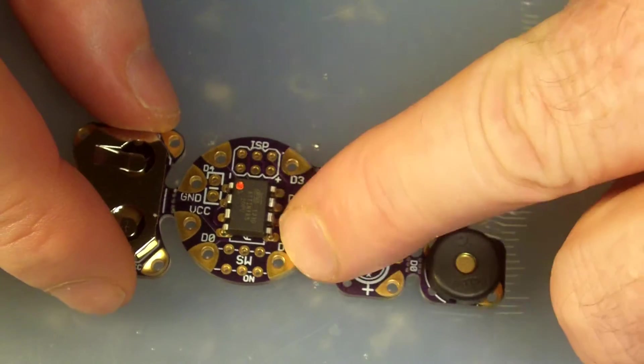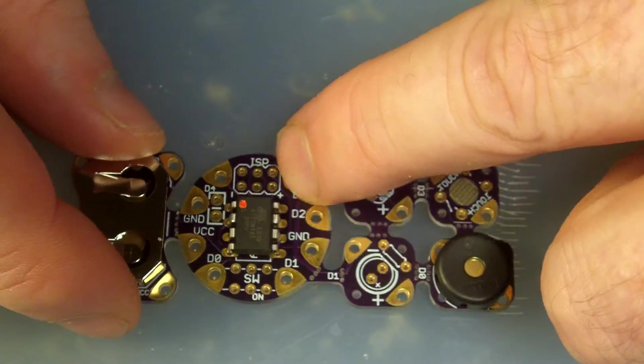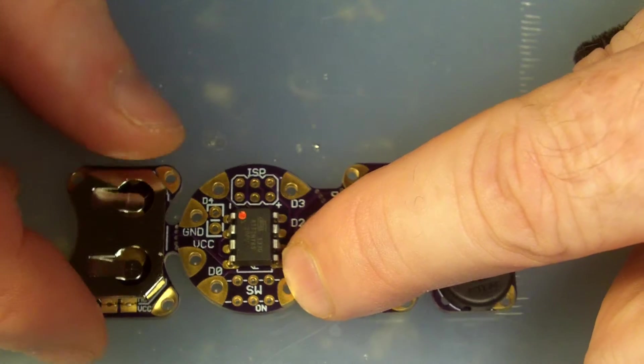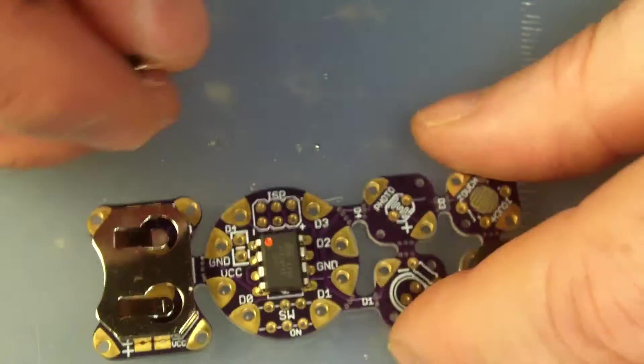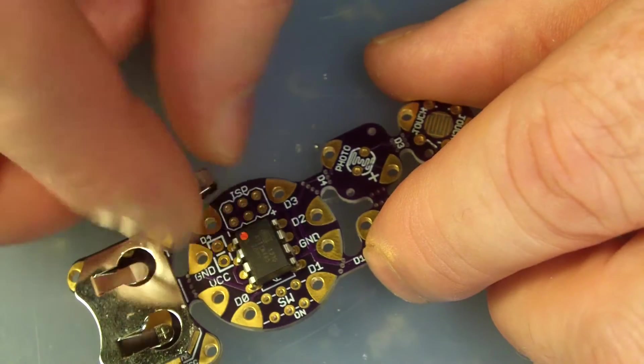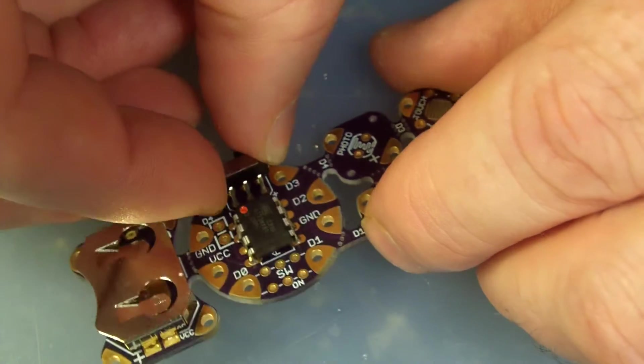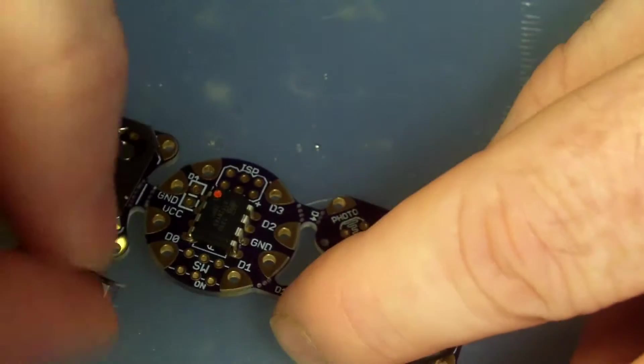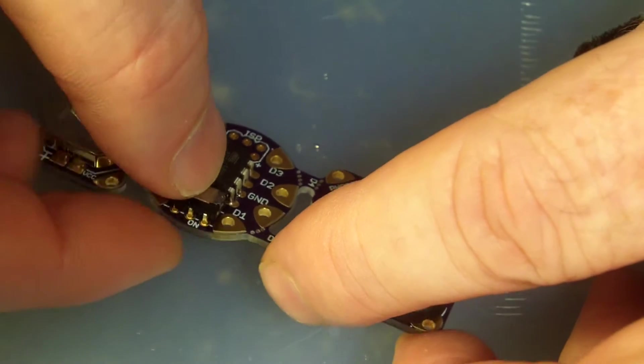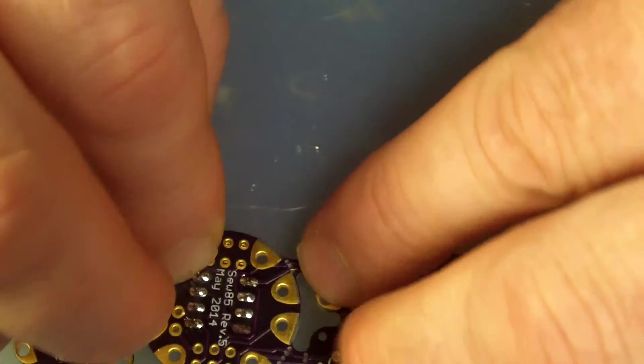Next to the MCU there's two sets of six pads. One of them is for the ISP programmer if you decide to reprogram your chip, and the other is for the switch. I've made these pads a little bit smaller so you should not be able to get these in the wrong way. You want them to go into the six holes that say SW with the on indicator next to it. This should sit right about the height of the MCU.